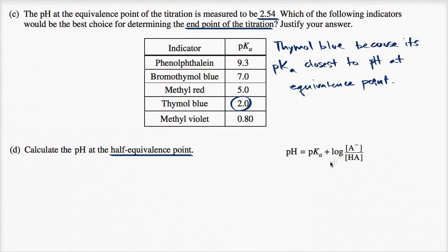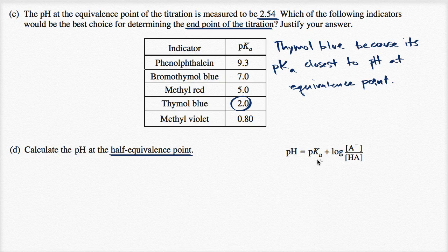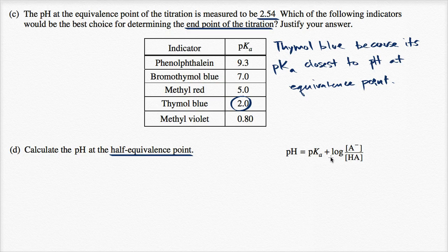is this one right over here that you might recognize as the Henderson-Hasselbalch equation. And it's actually not hard to prove. It comes straight out of the definition of Ka and then rearranging things and then taking the negative log of both sides and doing things like that. And I encourage you to watch those videos on Khan Academy if you are curious.